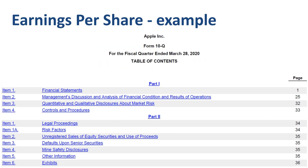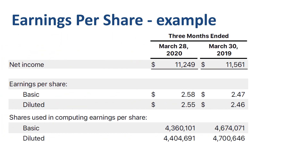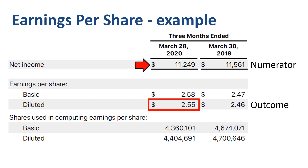Item 1, Financial Statements — more specifically the Consolidated Statement of Operations, also called the Income Statement. Here in the middle is the $2.55 diluted EPS for the quarter, which is the outcome of the EPS calculation. The inputs are net income in the numerator, and the number of shares in the denominator.